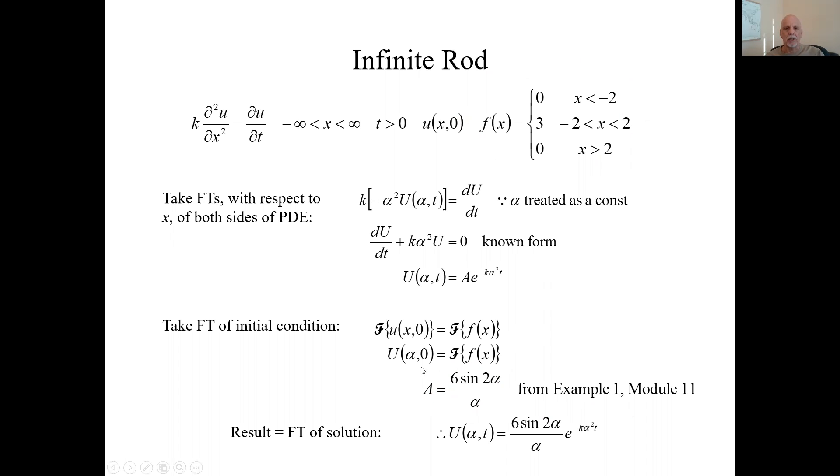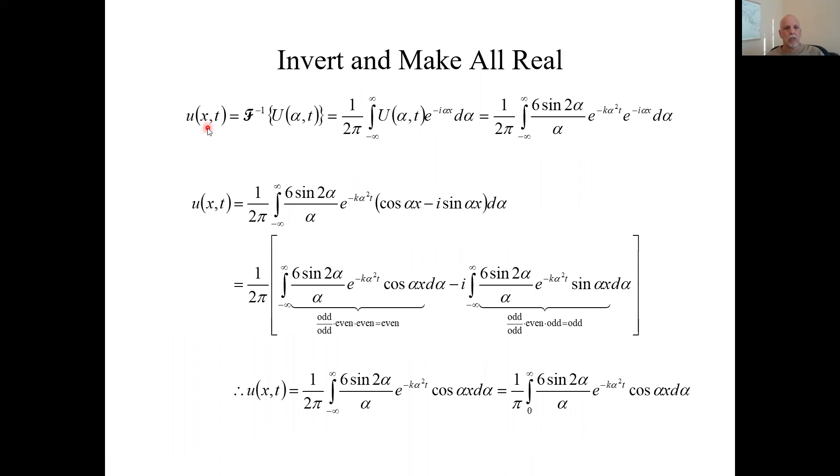From a previous example. That tells us what a is. Because what is this big U at time zero? When this t is zero, this e thing is just one, and we're just left with a. So this tells us what the big a is. So now we have the Fourier transform of the solution. We don't have the solution, but we have its Fourier transform. So now we need to take the inverse transform.